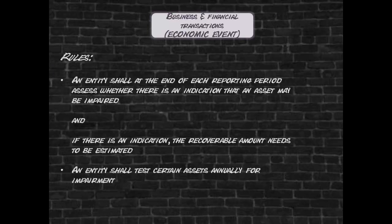IAS 36 requires an entity to annually consider if there is any indication of impairment of assets during the reporting period. In some instances, the standard requires an annual impairment test as well.